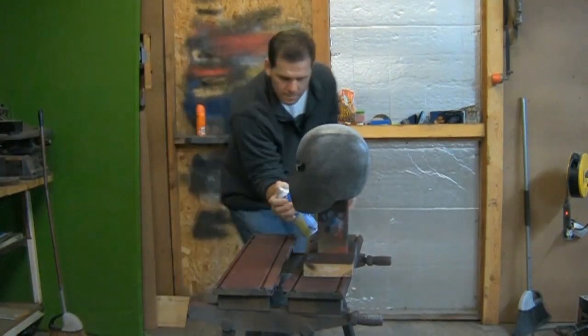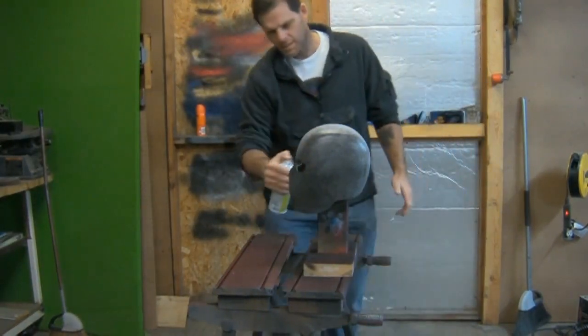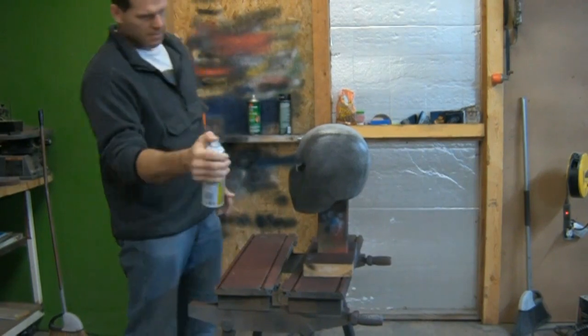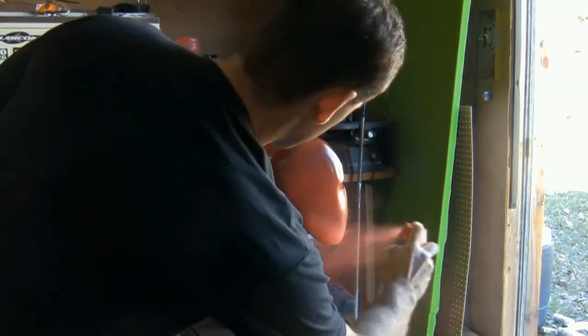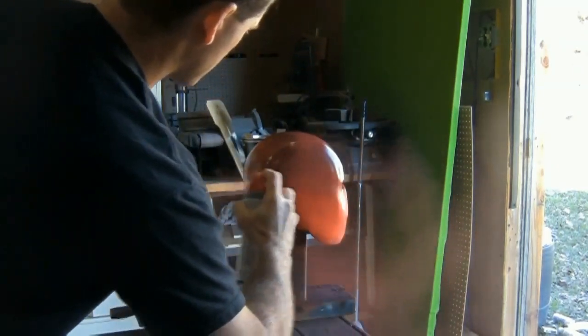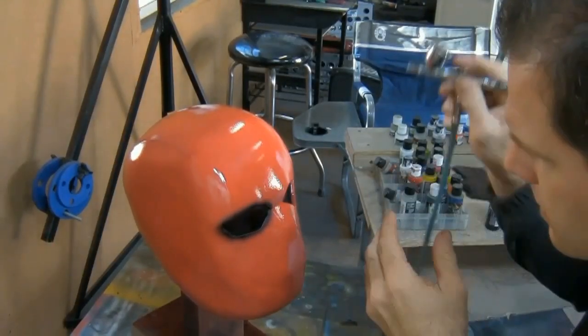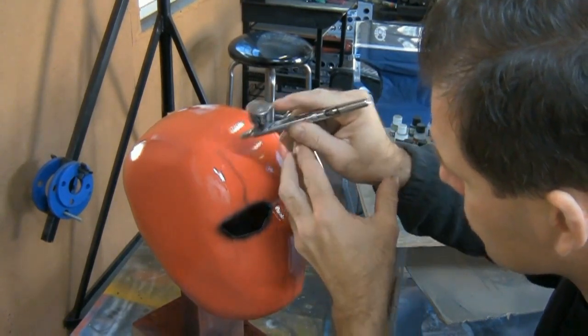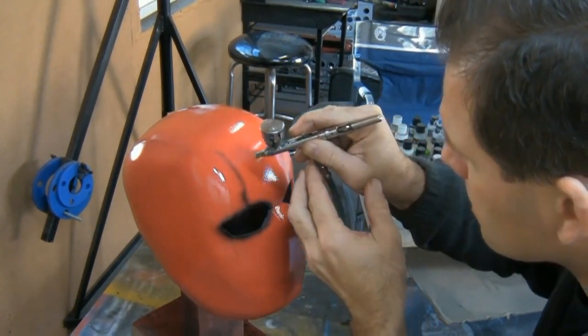Once everything is set up you can apply your Plasti Dip. Follow that up with a couple coats of paint. On my helmet I decided to add a little battle damage. So I grabbed the airbrush and went to work.